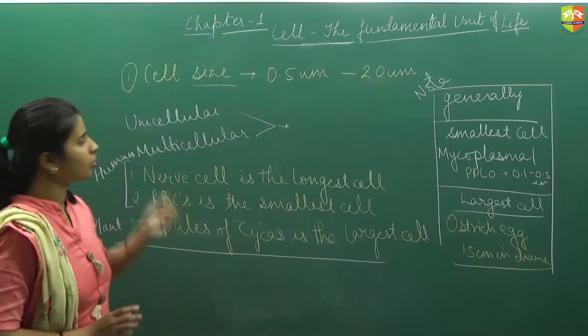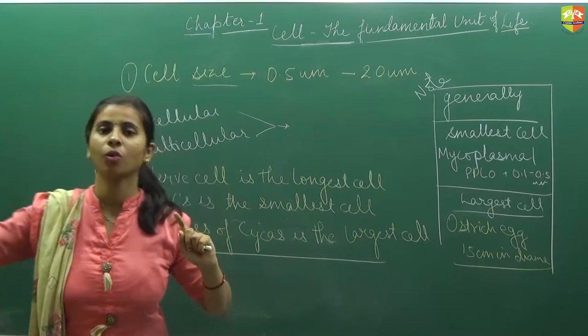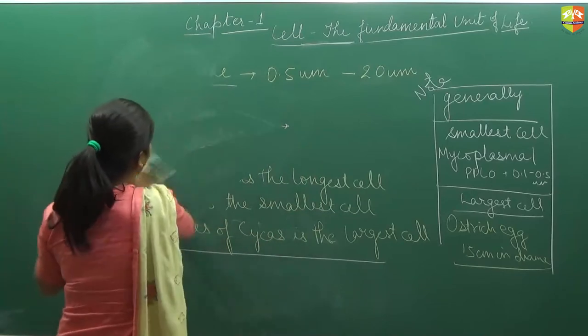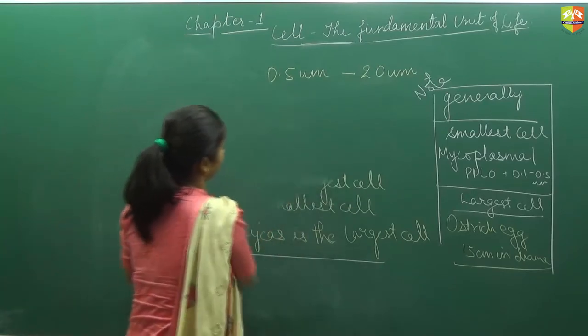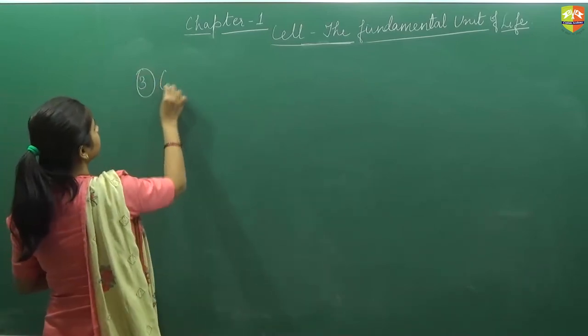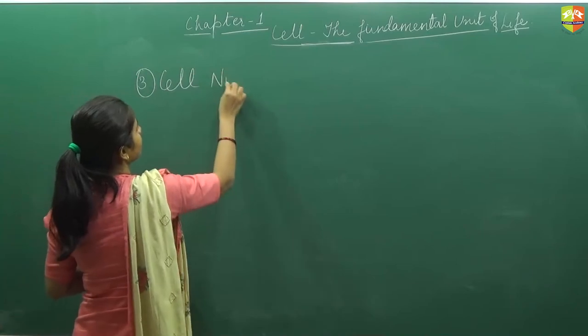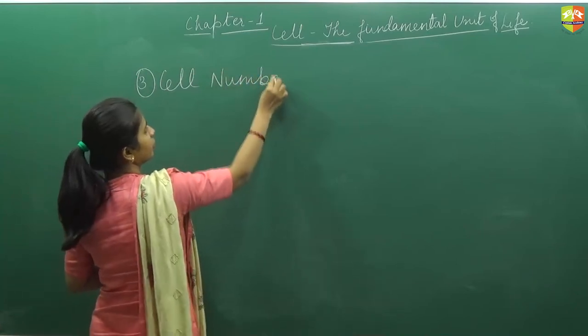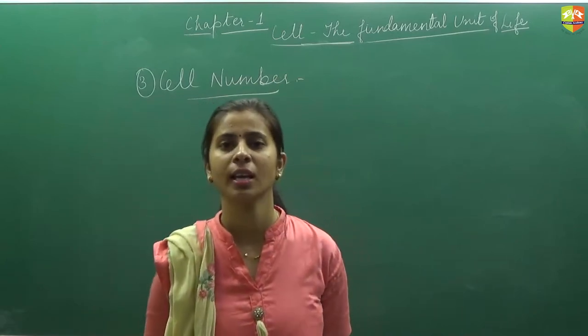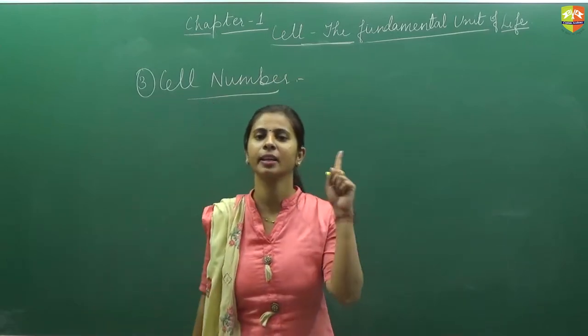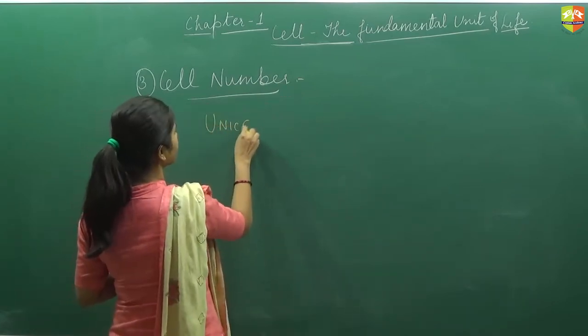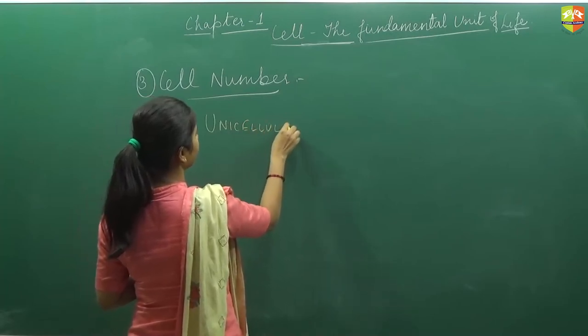So we discussed about cell shape. Second we discussed about cell size. And now we will talk about cell number. In cell number, as we know on the basis of the number of cells, we have done the categorization of the cell into unicellular and multicellular. So if it is unicellular, then obviously it is clear that the number of the cell will be 1.